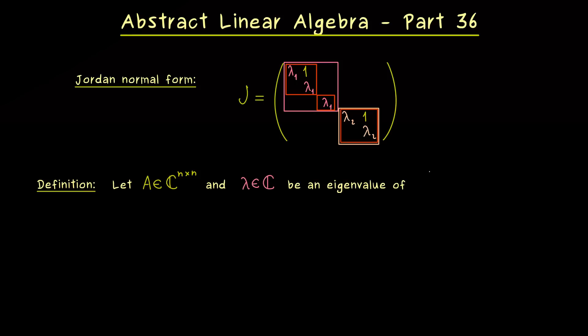So let's fix an eigenvalue lambda for our matrix A which means we already know that we have eigenvectors. This means the following kernel here is non-trivial. And you know we always have A minus lambda times the identity matrix. Exactly this is the definition of the eigenspace associated to the eigenvalue lambda.